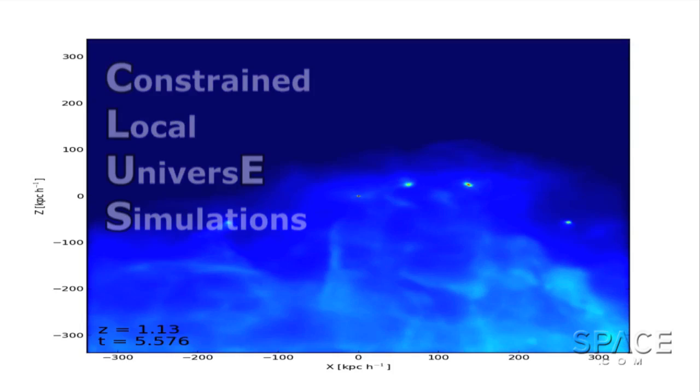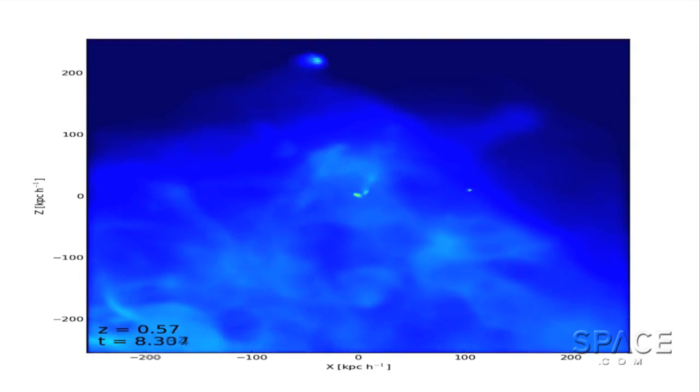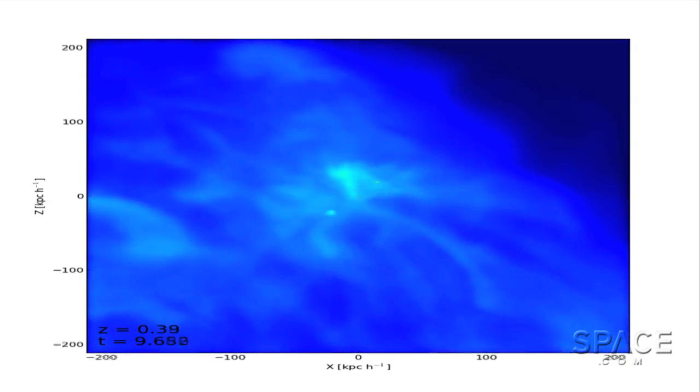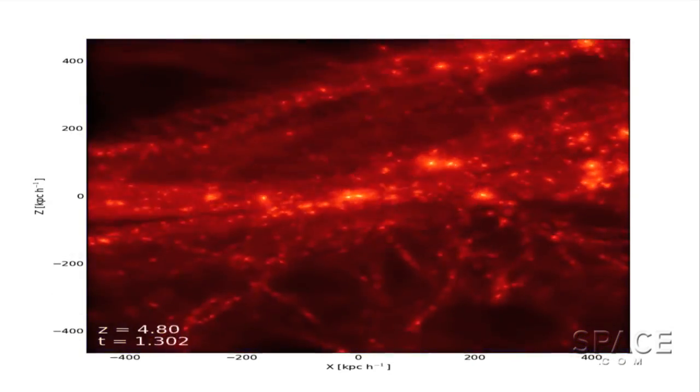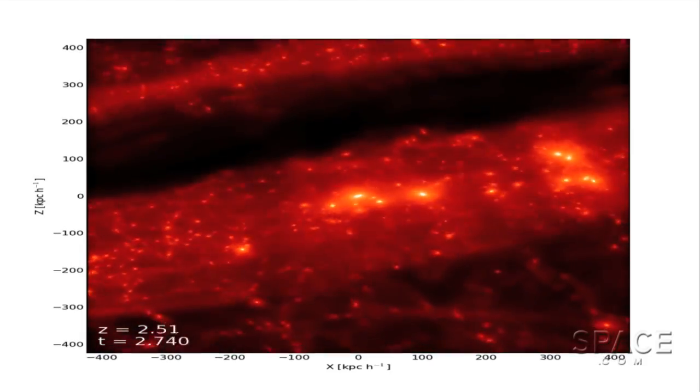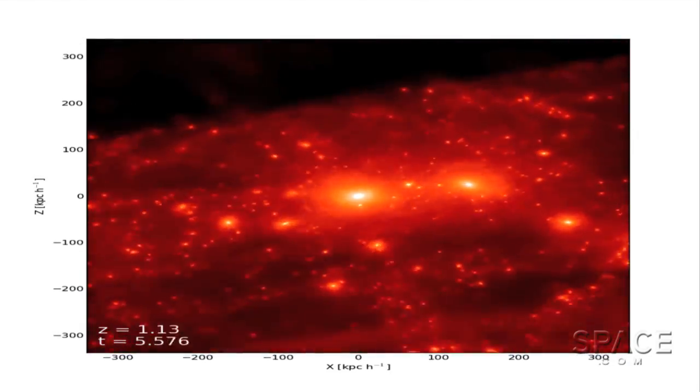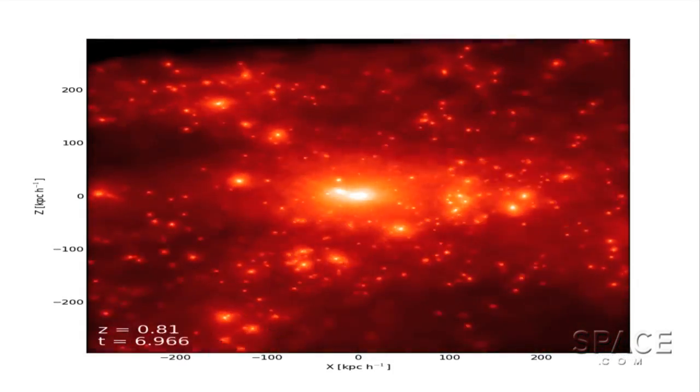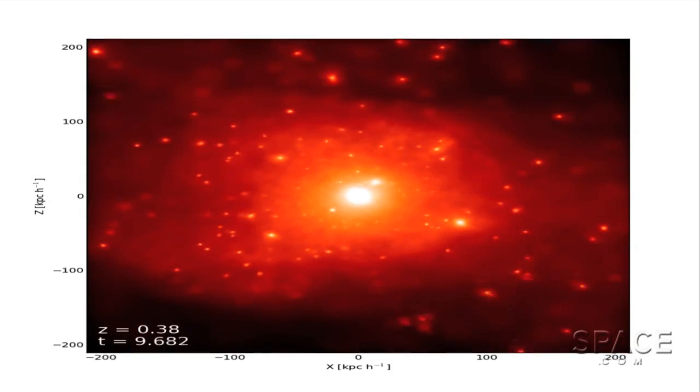Their new simulations show that dwarf galaxies on the outskirts of our local group of galaxies are whipped around so fast by gravity that their gas matter is stripped away. With much less gas to work with, many fewer stars form, and particularly not massive bright ones. So the dwarfs may actually be there, but very dim and extra small in stature.